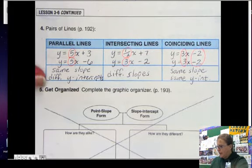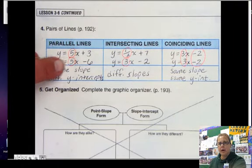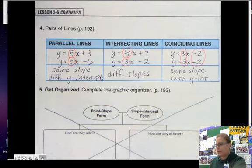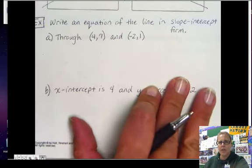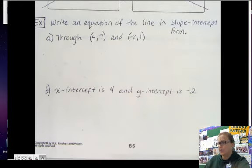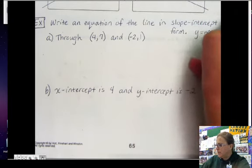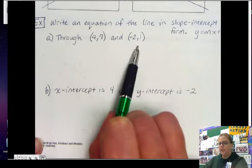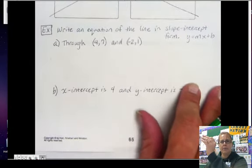Let's do a couple of examples not of parallel, intersecting, and coinciding, but of writing equations of lines. So if I wanted to write an equation of the line in slope-intercept form, and slope-intercept form, remember, is y equals mx plus b, and I wanted to write an equation of the line through these two points in y equals mx plus b form.